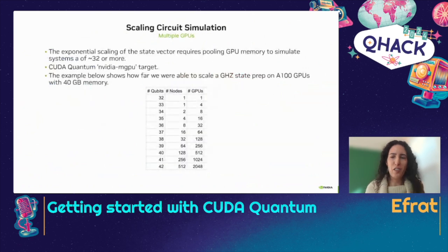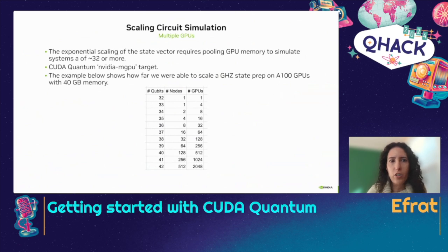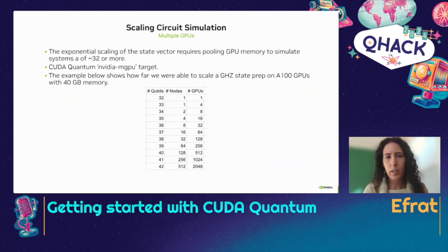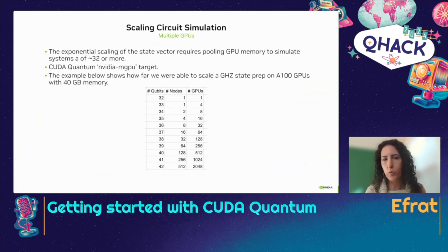But what if I want to scale to more than one GPU? There is an exponential scaling of the state vector that requires GPU memory to simulate systems of about 32 qubits or more, depending on the GPU. To handle that, we have a target called nvidia-mgpu. Here you can see a table estimating how many GPUs or nodes you will need in order to run different numbers of qubits.